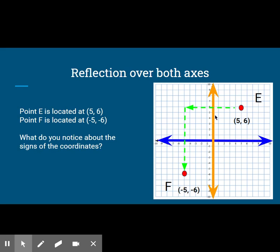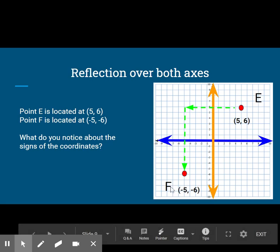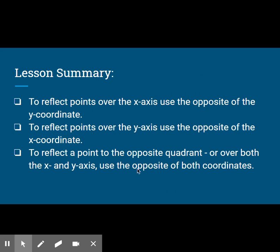A reflection over both axes is a combination of a reflection over the y-axis and a reflection over the x-axis in either order. We take the point (5, 6), first reflect it over the y-axis, and then reflect it over the x-axis. The ending point would be (-5, -6). Notice that in a reflection over both axes, both coordinates change their signs. To reflect points over the x-axis, use the opposite of the y-coordinate. To reflect points over the y-axis, use the opposite of the x-coordinate. To reflect a point to the opposite quadrant, or over both the x- and y-axis, use the opposite of both coordinates.